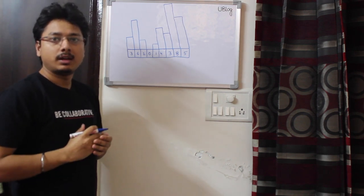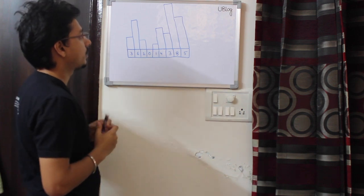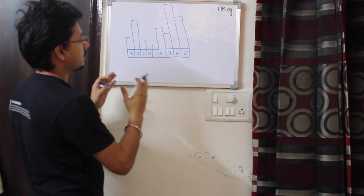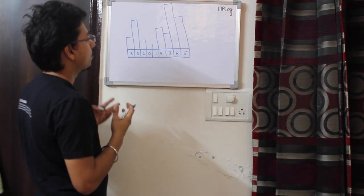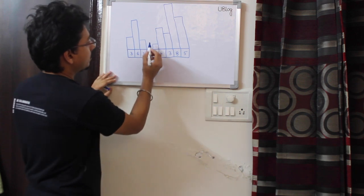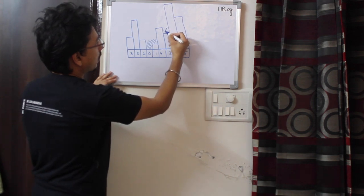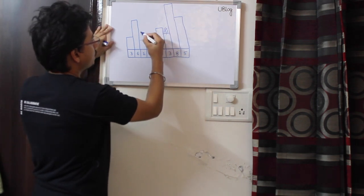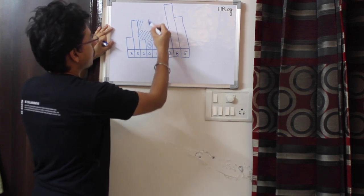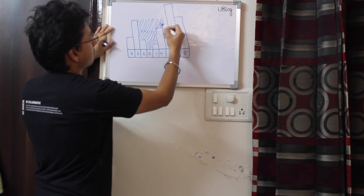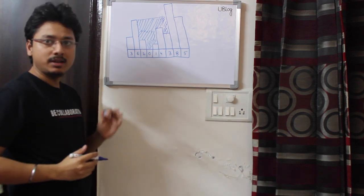Now I need to find how much rainwater I can trap in this structure. If I consider this as a physical structure and see logically how much water can be stored — water can be stored here, here, here, and here. This is the total water I can store.